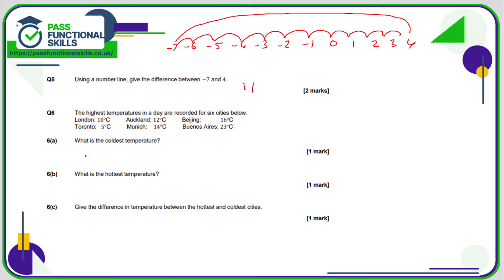Question number six: we've got some temperatures. Which is the coldest? None of them are negatives, that makes life nice and easy. So which is the lowest number? That's going to be Toronto because that's the only one which is a single digit number.